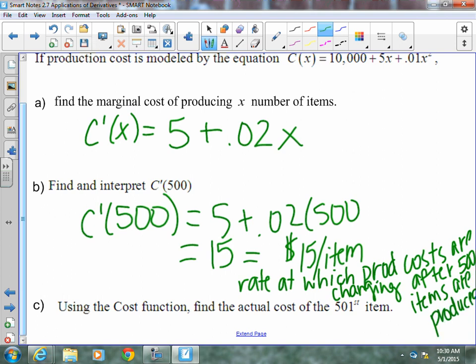That means to make the 501st item is probably close to $15. Not necessarily exactly $15 because this is the slope at 500 which may or may not touch the curve or be close to the curve at 501.